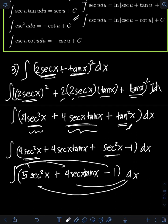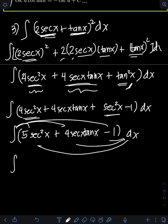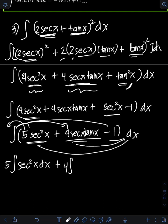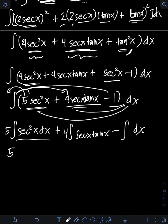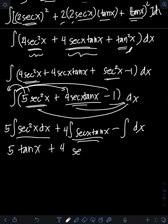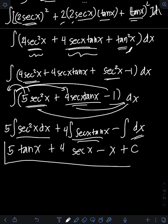We can distribute the integral symbol and integrate term by term. We will have 5 times the integral of sec²x dx, plus 4 times the integral of sec x tan x dx, minus the integral of dx. So: 5 times the integral of sec²x dx equals 5 tan x; plus 4 times the integral of sec x tan x dx equals 4 sec x; minus the integral of dx equals x. So the final answer is 5 tan x plus 4 sec x minus x plus c.